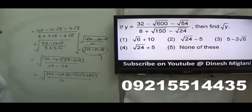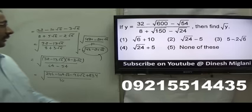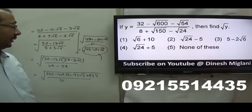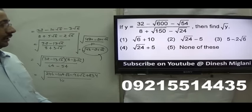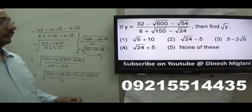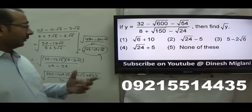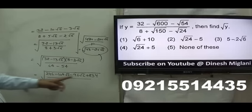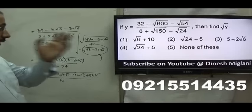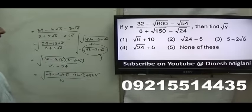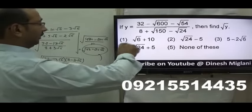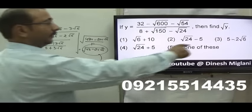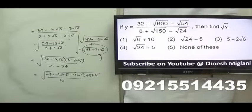Now I need to check which option, when squared, gives 48 − 20√6. Taking option (√6 + 10): square gives 6 + 100 = 106, which is not 48. Taking another option (5 + √24): square gives 25 + 24 = 49, also not matching. I cannot match any option cleanly to 48 − 20√6, so the answer is none of these — the fifth option becomes my answer.